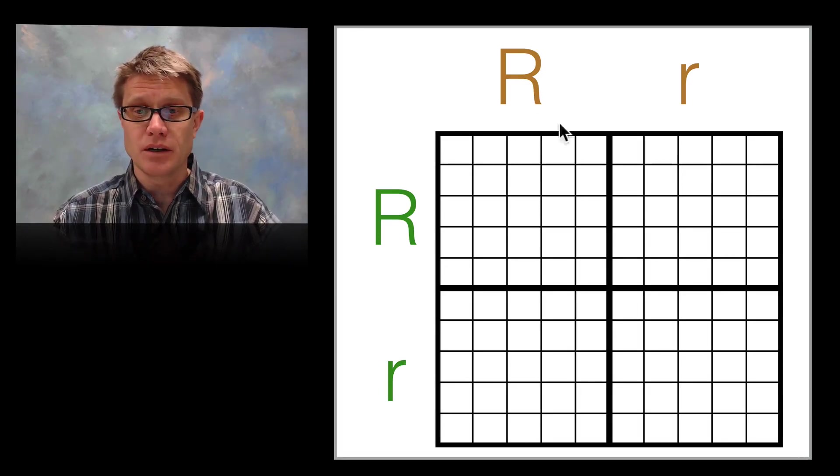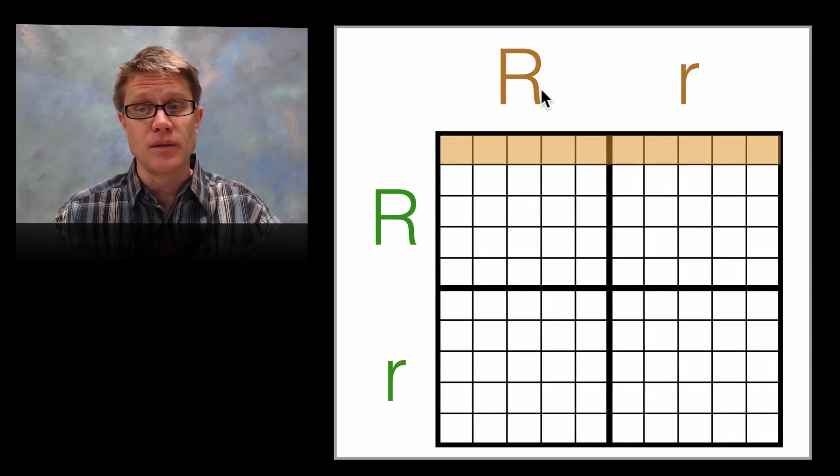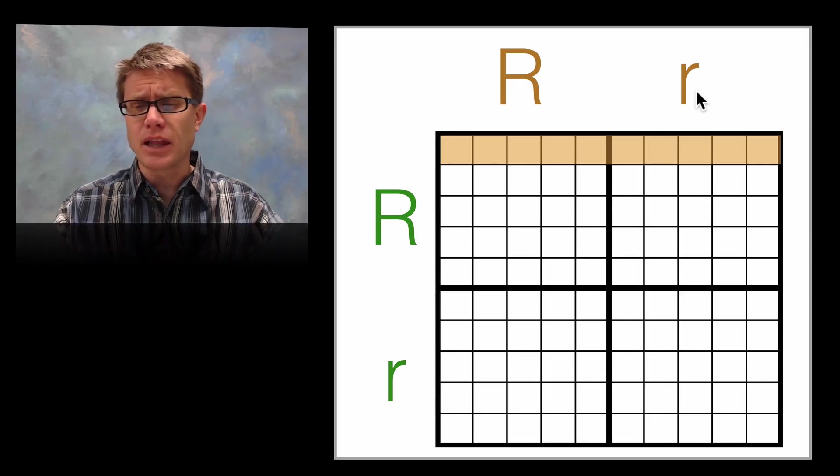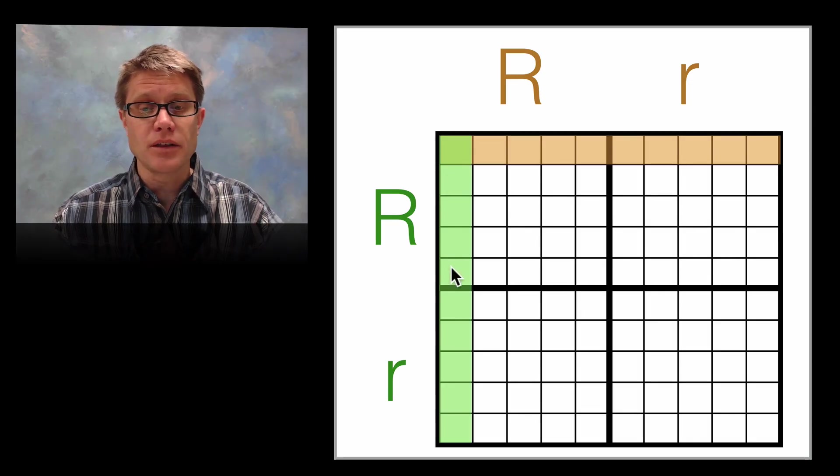And the reason I put a grid in here is that these right here, these 5 squares represent the 5 in 10 probability that we could give the big R and the 5 in 10 probability that we could give the little r. Now you might say this looks just like that last Punnett square. It just has more squares in it. But just hold on tight because we're going to get there. So on the other side this would be another gene that we could pull from the gene pool. Again it's going to be 5 out of 10 and 5 out of 10.